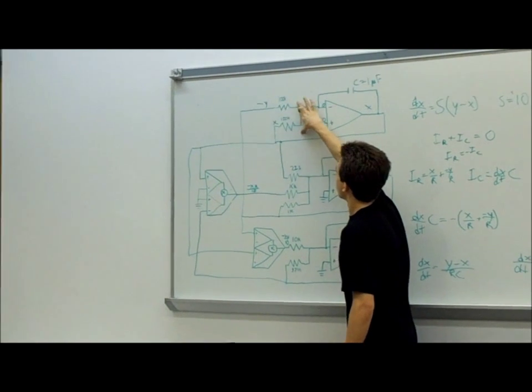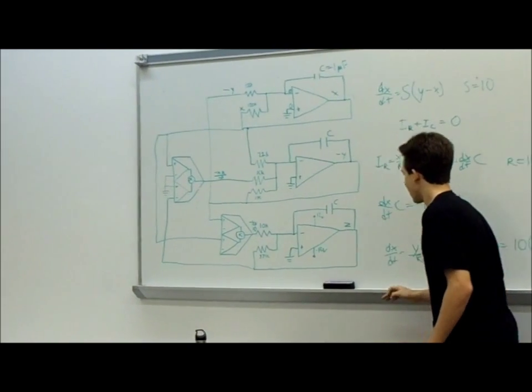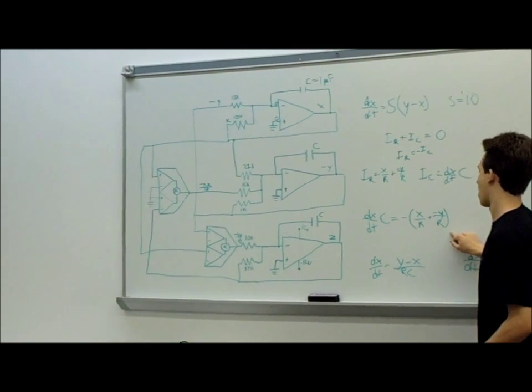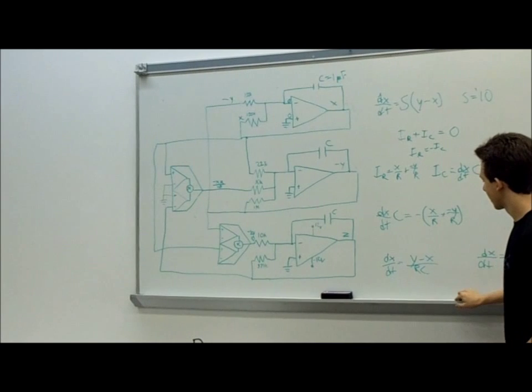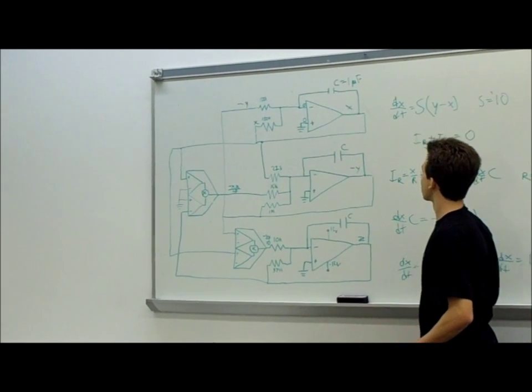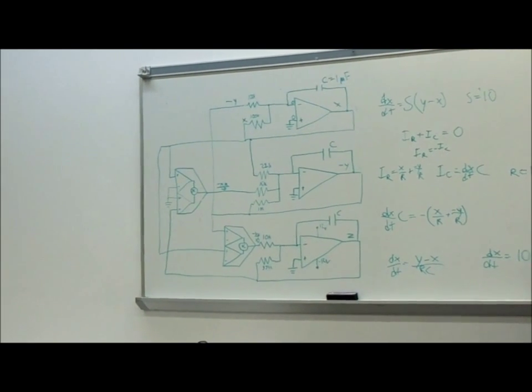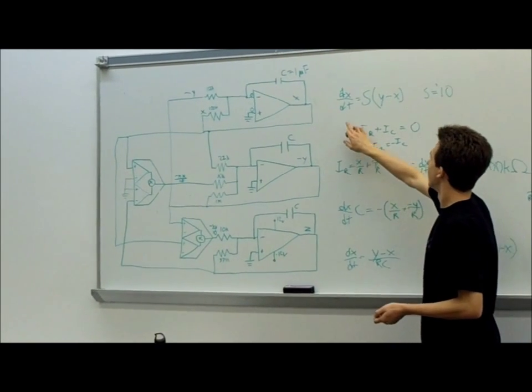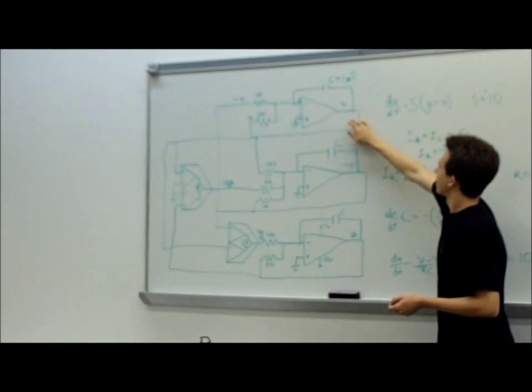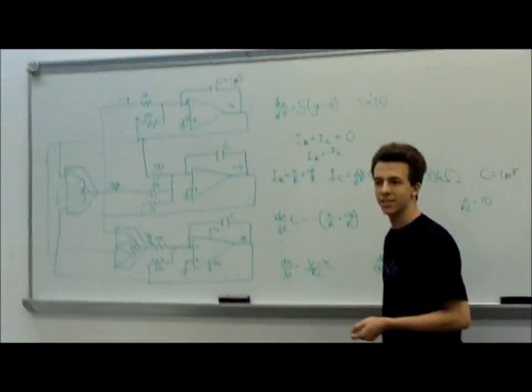And the current flowing through these two resistors is equal to x over this resistance plus negative y over this resistance. In other words, dx dt times c is equal to the opposite of x over r plus negative y over r. To simplify, dx dt is equal to y minus x divided by rc. In our system, resistance is equal to 100 kiloohms and capacitance is equal to 1 microfarad. So 1 over rc is equal to 10. So dx dt is equal to 10 times y minus x. In the Lorentz system of equations, dx dt is equal to s times y minus x. So that s is equal to 10. Thus we can find that the differential equations for the circuit that we're using and the differential equations for the Lorentz system match.